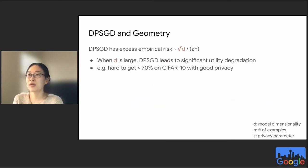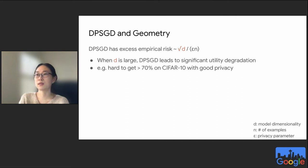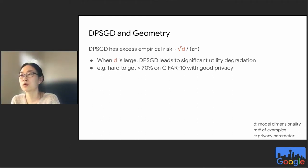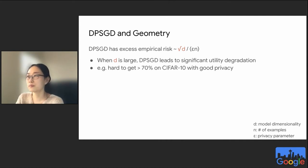A potential problem is that while the Gaussian noise we add is isotropic, the loss function might not be, so the noise can be suboptimal. This is reflected in the excess empirical risk: compared to non-private learning, which has no dependency on dimensionality, DP-SGD has a dependency on D, the model dimensionality, where epsilon is the privacy parameter and N is the number of examples. This square root D term can be significant for large models — in practice it's hard to get accuracy higher than 70% for CIFAR-10 with good privacy, while the non-private model easily reaches 90%.